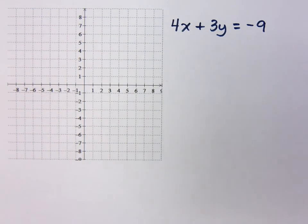If we look at 4x plus 3y equals negative 9, I want you to find the slope and the y-intercept so that we can graph this. How would you go about finding the slope for this guy?